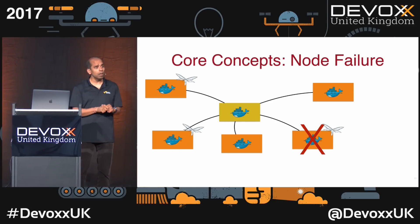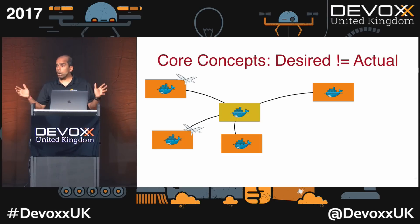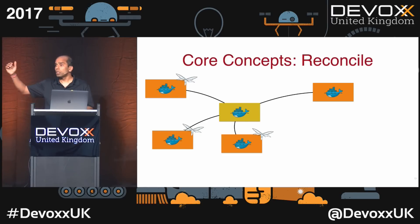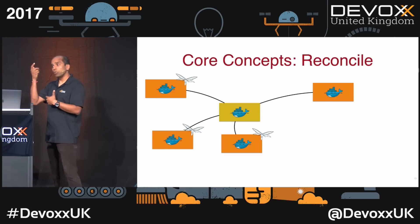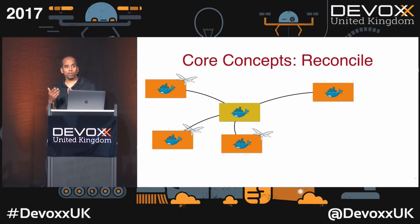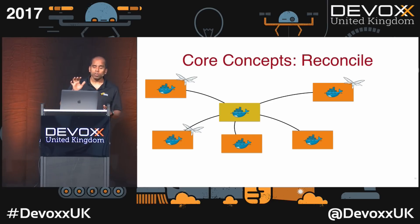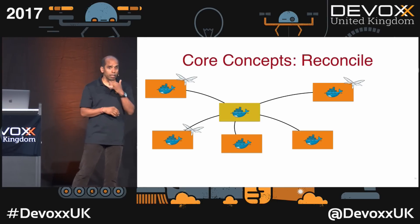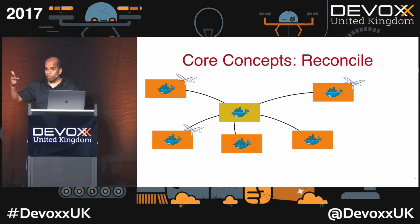If a node fails while a service is running, Docker sees that desired state doesn't match actual state and does reconciliation. It detects the failed heartbeat and reschedules the container on a different host. It's a declarative model — you say three replicas and Docker ensures three replicas are always running. If a container goes down, the same thing happens: desired doesn't equal actual, so it spins up a new container based on the scheduling algorithm.